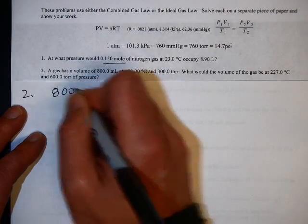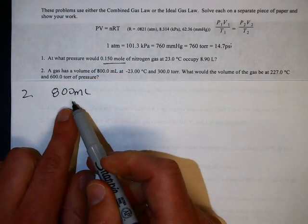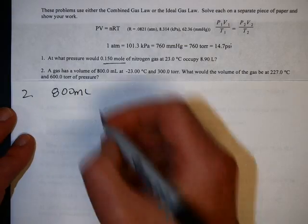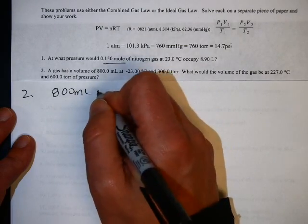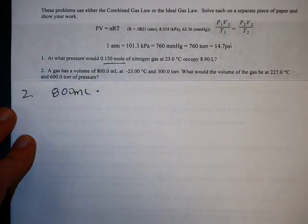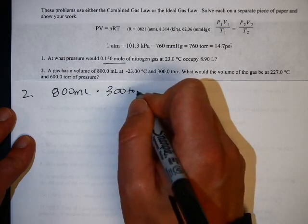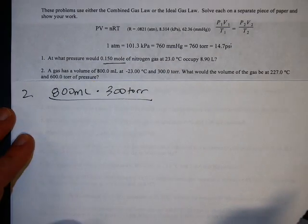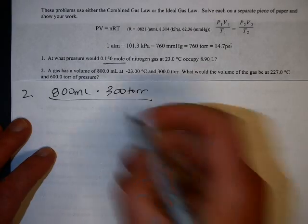It starts at 800 milliliters. Now for the ideal gas law, you change this to liters, but for the combined gas law, you don't need to. That's your volume. Your pressure is 300 torr, and your temperature is 250 Kelvin.